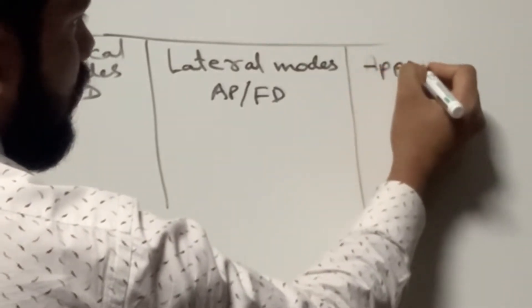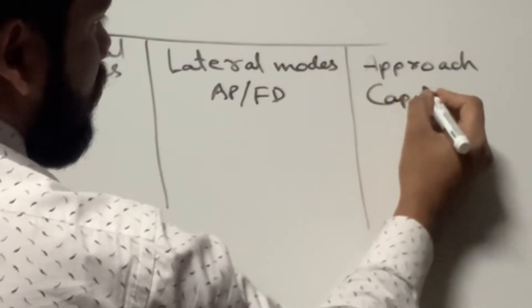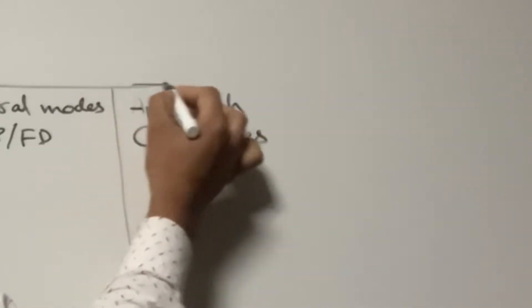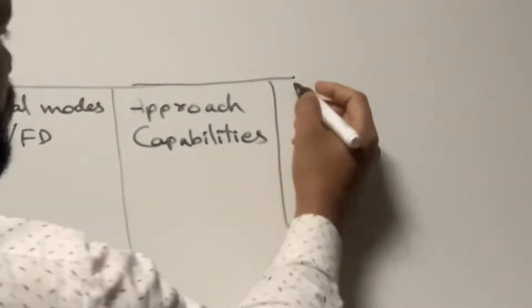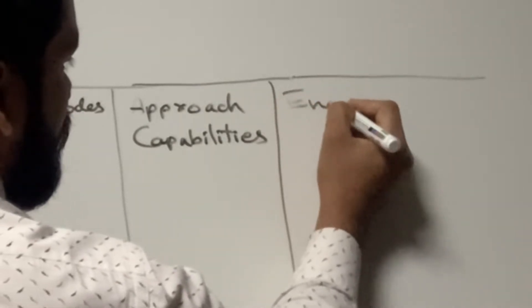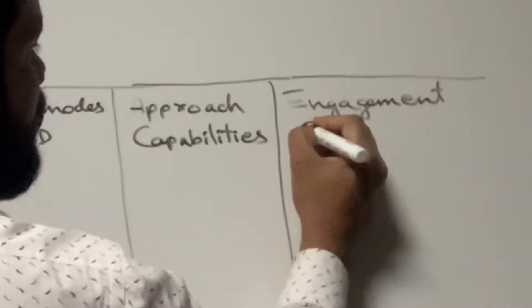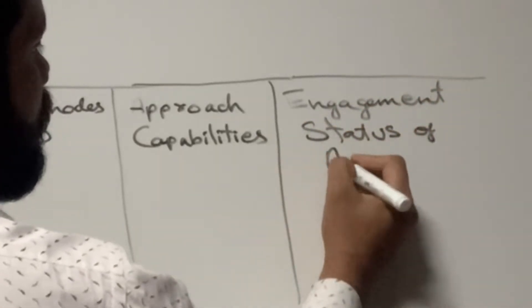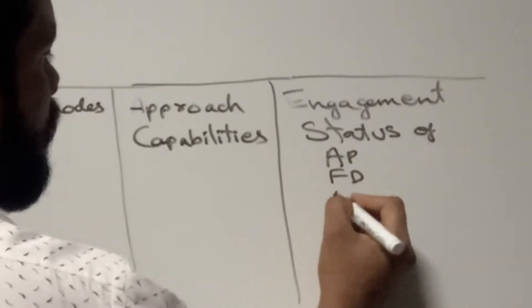The fourth column of the PFD shows the approach and the ILS-related capabilities. The fifth column of the PFD shows the engagement status of autopilot, flight director, and autothrust.